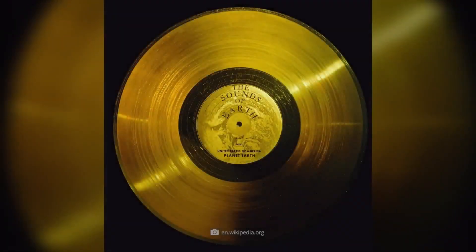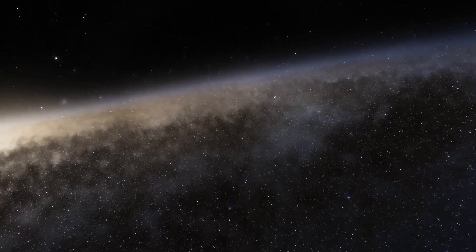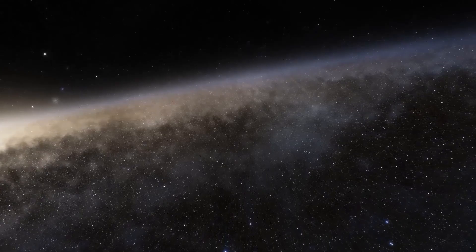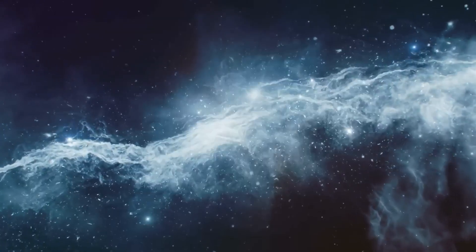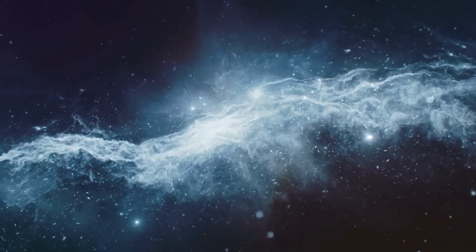The data collected by the Voyager instruments were stored on 8-track tape recorders before being transmitted back to Earth using a low-powered 23-watt transmitter, equivalent to the energy consumption of a household light bulb. Each spacecraft was equipped with a 12-foot diameter high-gain antenna, allowing it to communicate with Earth across vast cosmic distances using light-speed radio signals.